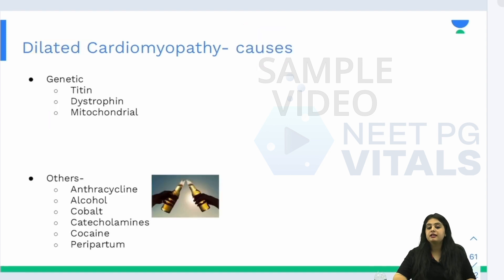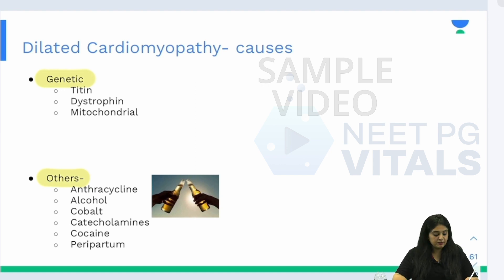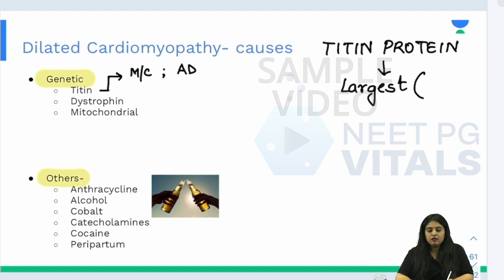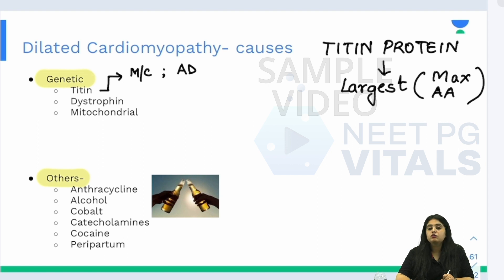Why does dilated cardiomyopathy happen? It is associated with certain genetic causes as well as miscellaneous drugs and lifestyle habits. The most common genetic cause, inherited as an autosomal dominant disorder, is a mutation in the titin gene. Titin protein, as covered in biochemistry, is the largest protein in the body with around 30,000 amino acids. This mutation with autosomal dominant inheritance can result in DCM.